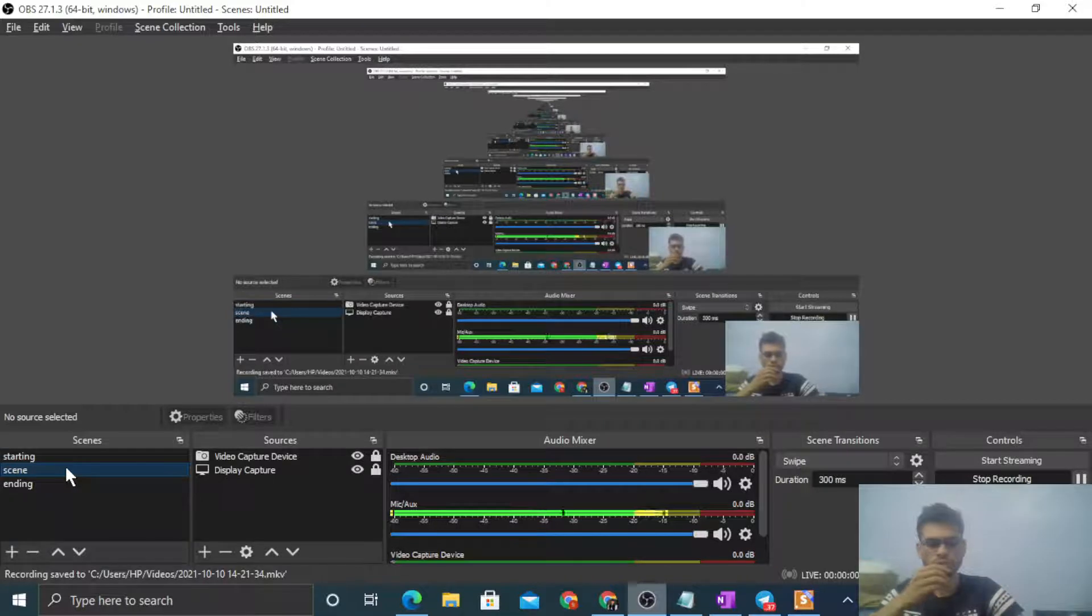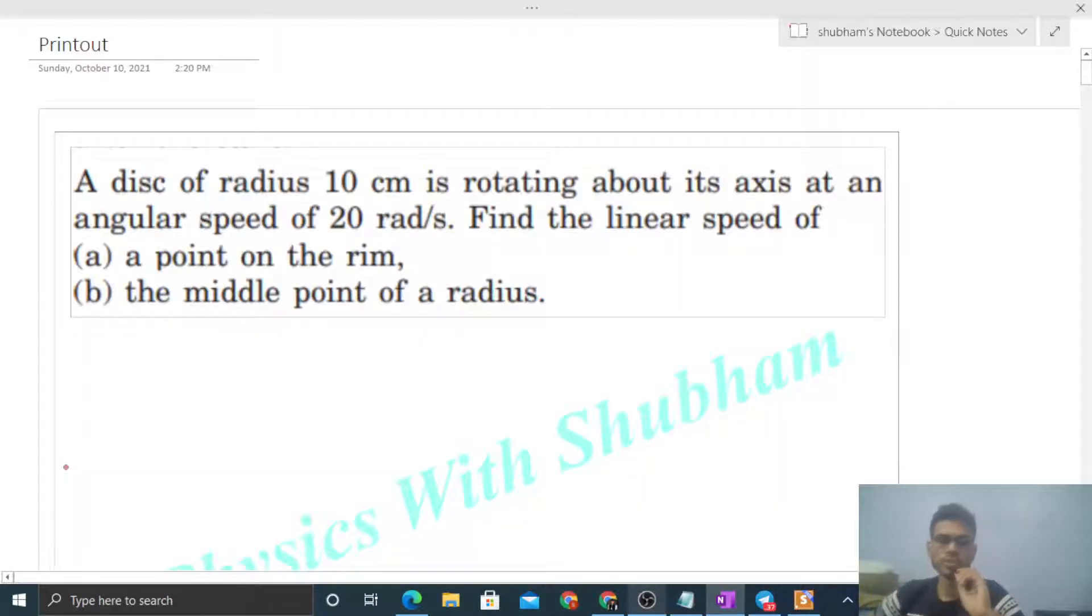Okay, hi everyone. So today let's discuss this interesting problem. It is a disk of radius 10 centimeter is rotating about its axis at an angular speed of 20 radian per second. Find the linear speed of a point on the rim.